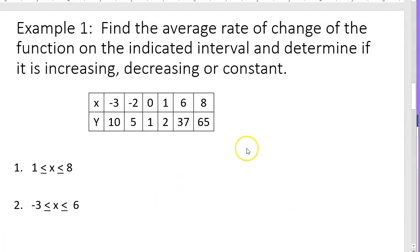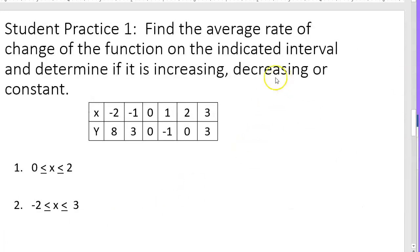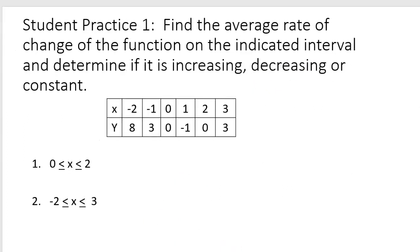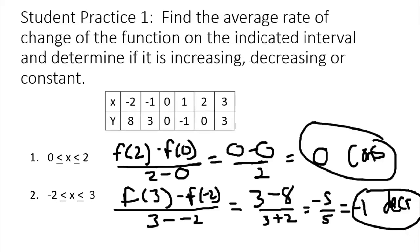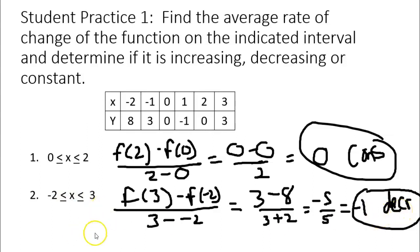For the student practice problems: Number 1 gives an average rate of change of 0, which means the function is constant on the interval from 0 to 2 — the y value where it started is where it stopped. For number 2, on the interval from −2 to 3, the average rate of change is −1, which means the function was decreasing on average over that interval.